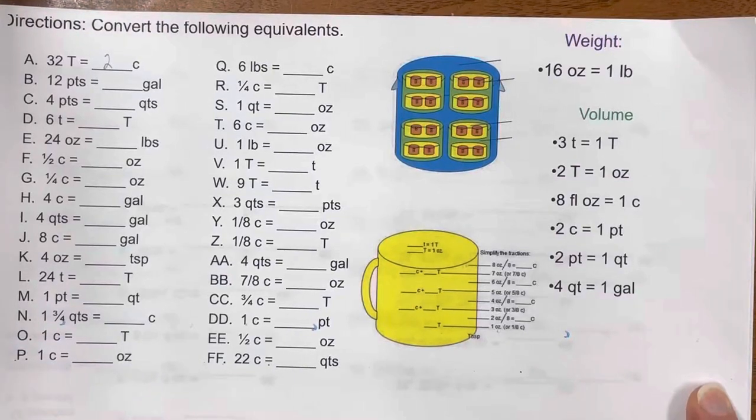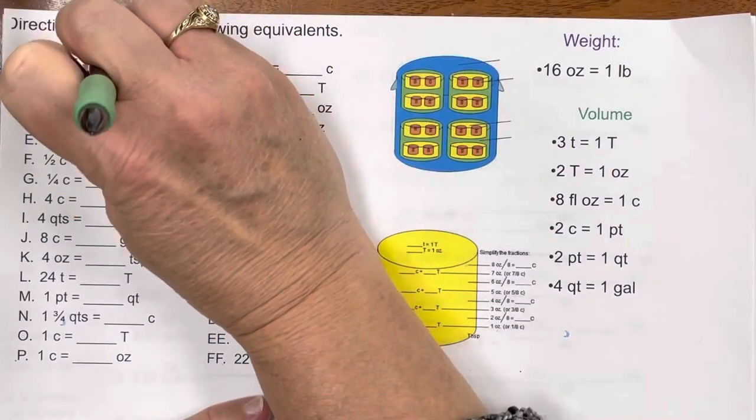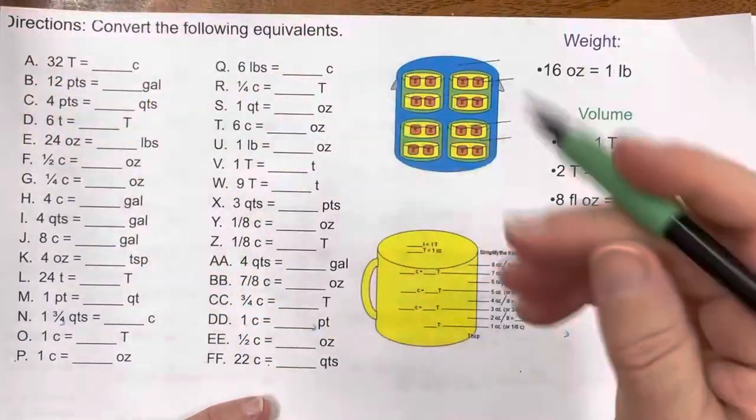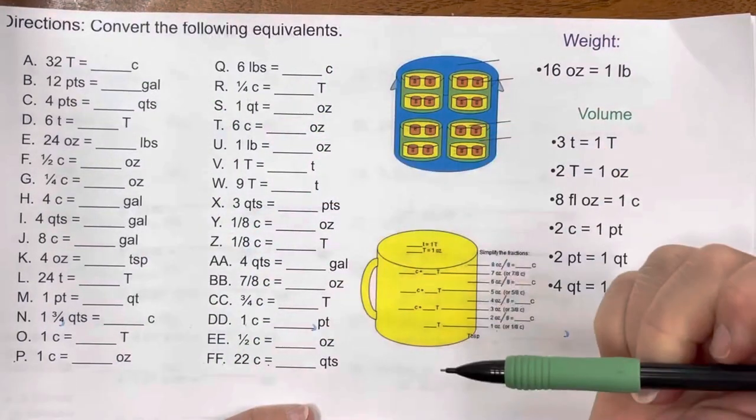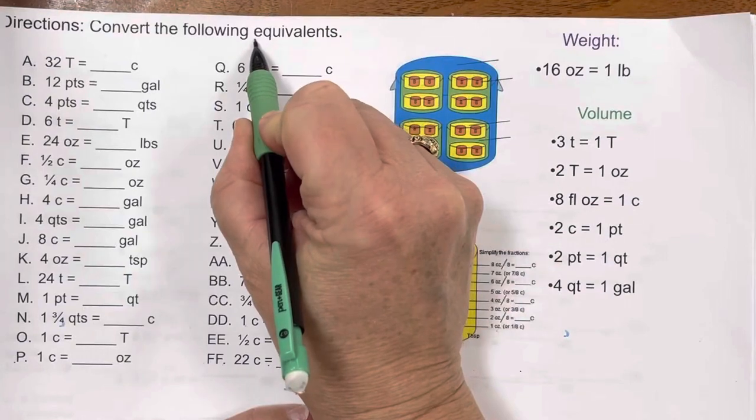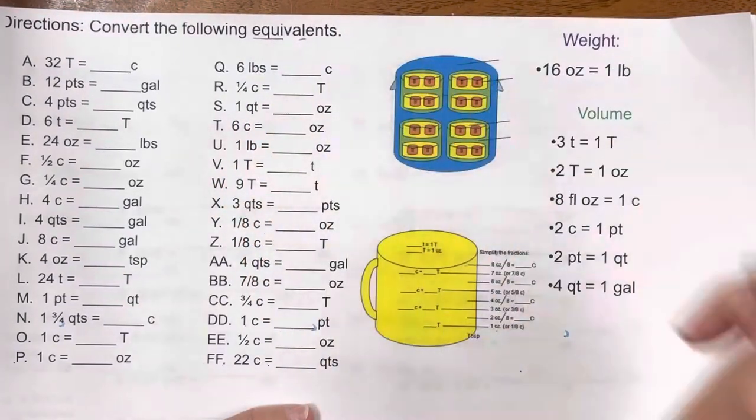Hi everyone. Today we're going to learn about how to convert equivalents. This worksheet is in your Google Slides. To do the conversions of equivalents means that they are equal. The word equal is in there: E-Q-U-I-L equivalents.